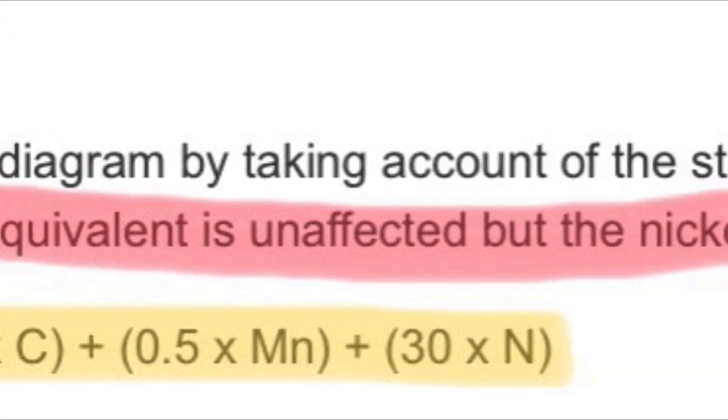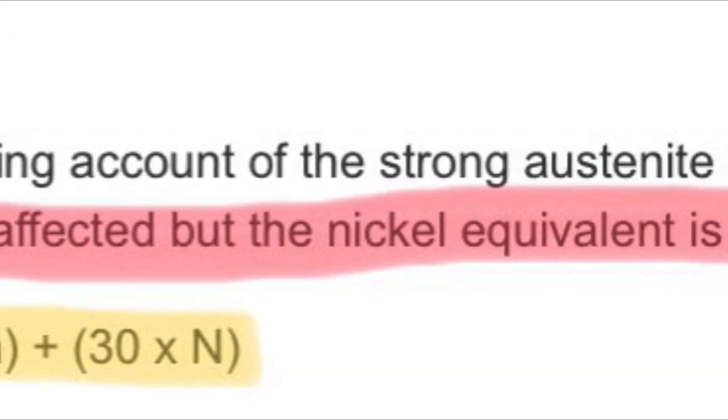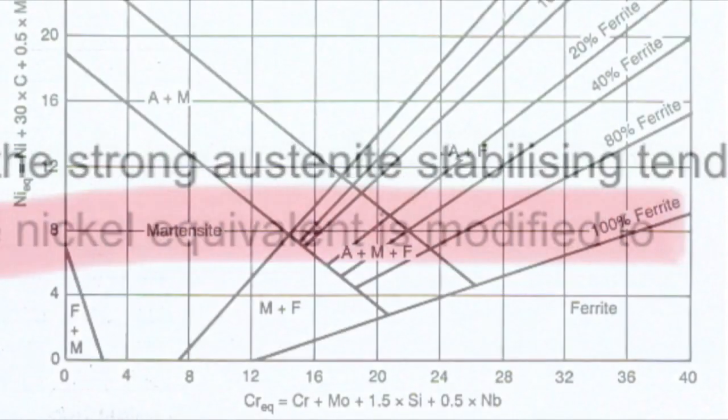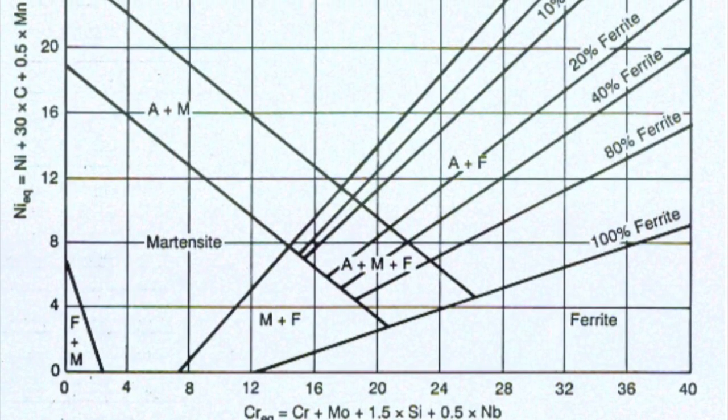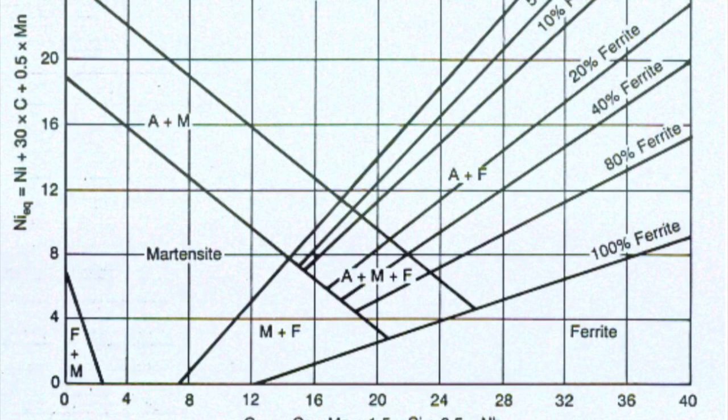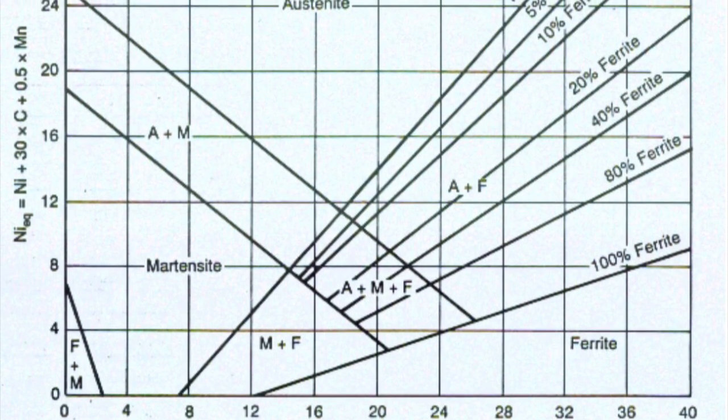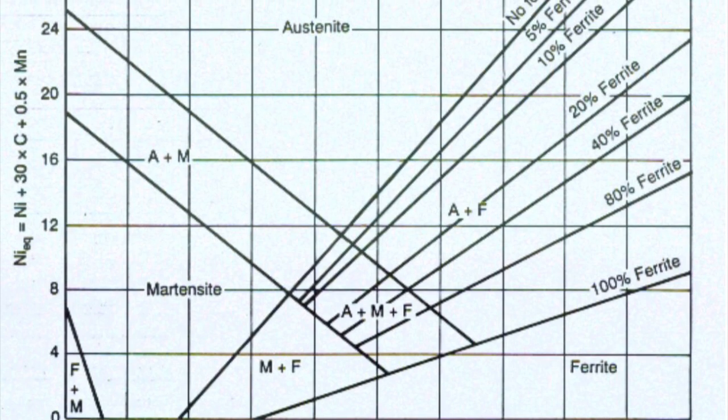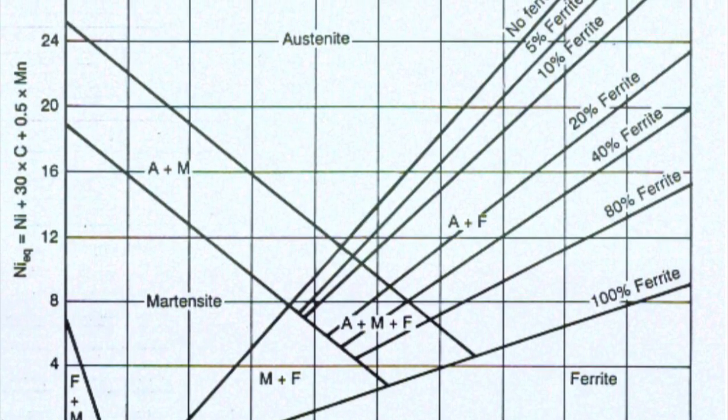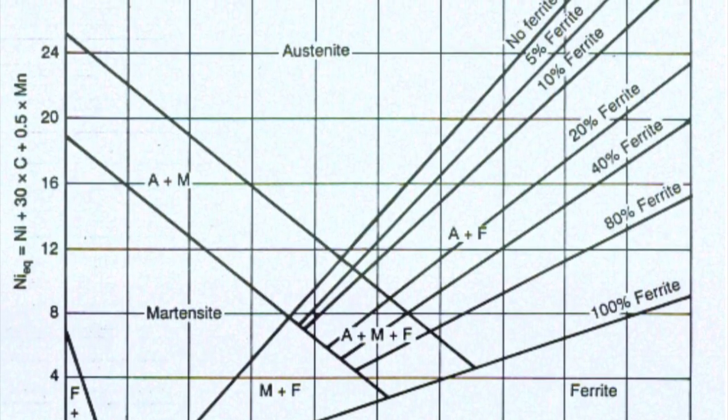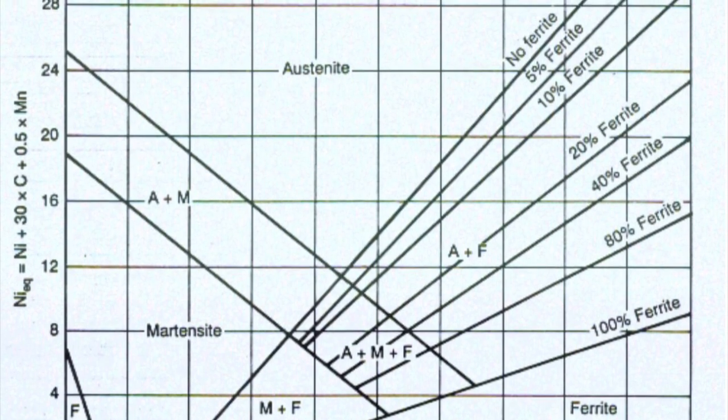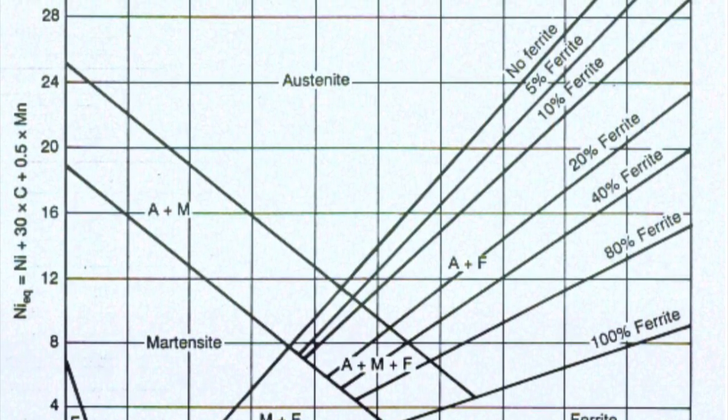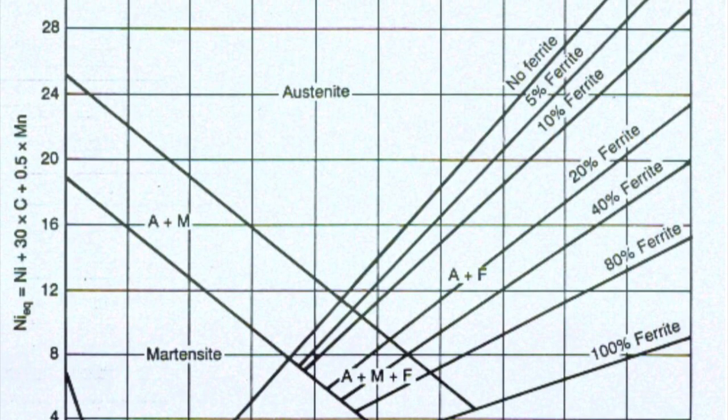Chromium equivalent is same for both Schaeffler and DeLong Diagram. This Schaeffler Diagram can be used to determine the type of microstructure that can be expected when a filler metal and parent metal of different composition are mixed in the weld. The main disadvantage with this diagram is that it does not represent nitrogen, which is a very strong austenite stabilizer.